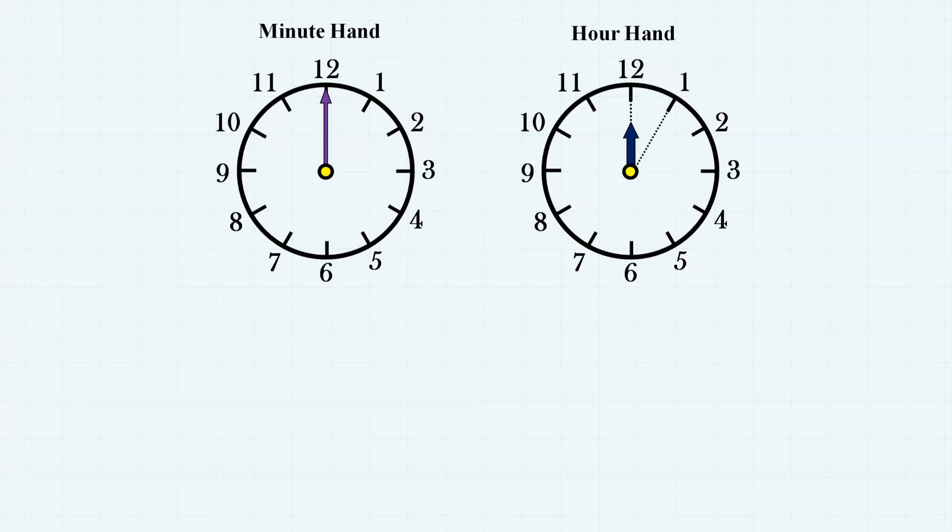Let's start with the minute hand. The minute hand makes a full rotation on the clock every hour. That is, the minute hand rotates 360 degrees in 60 minutes. Therefore, it rotates 360 degrees divided by 60 minutes, which is 6 degrees per minute.